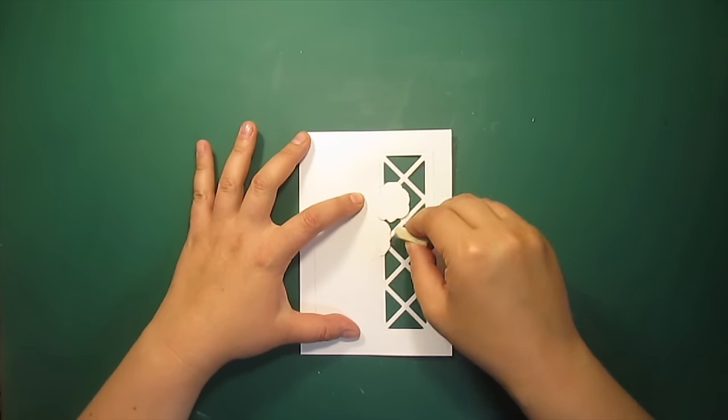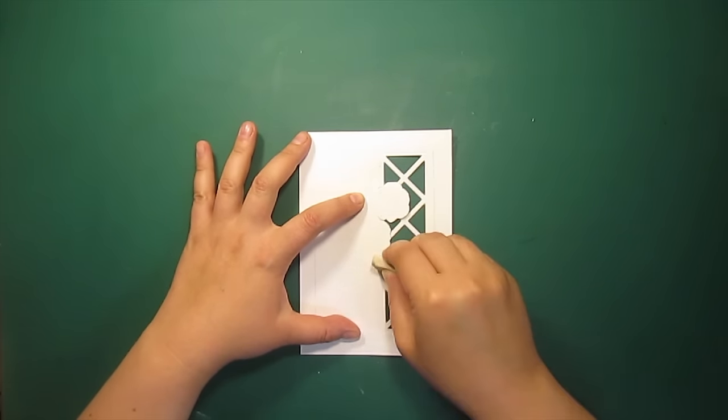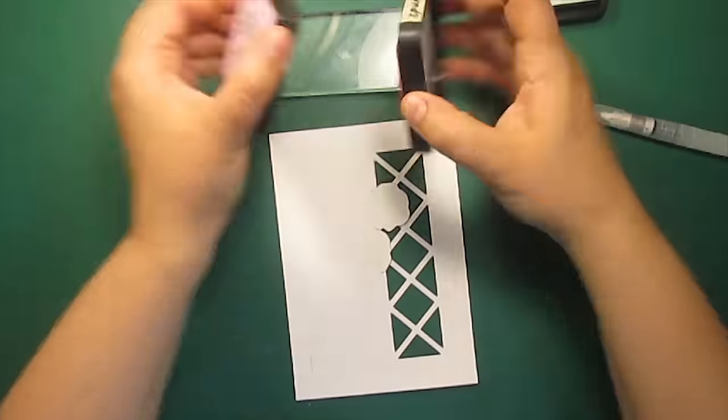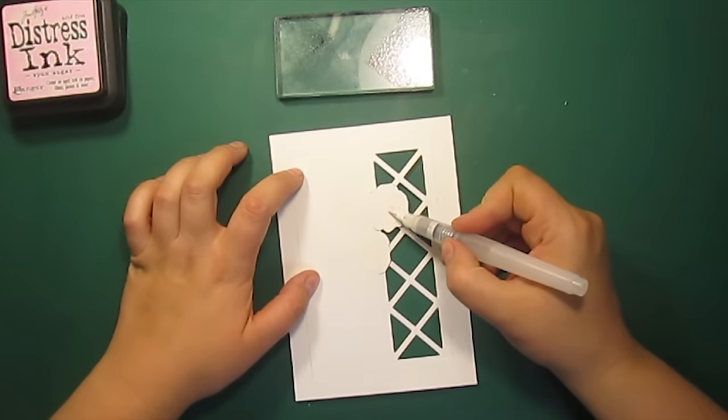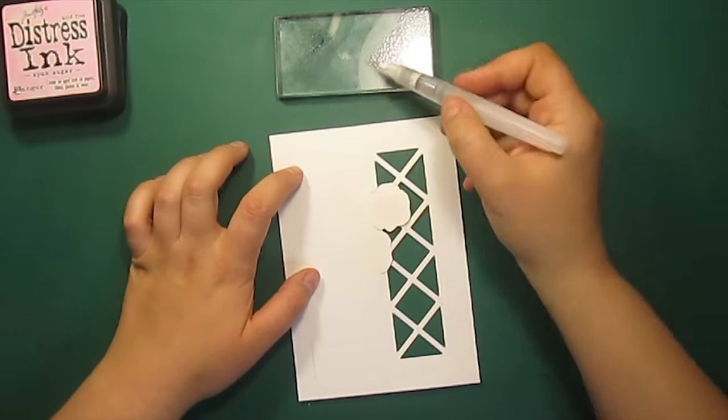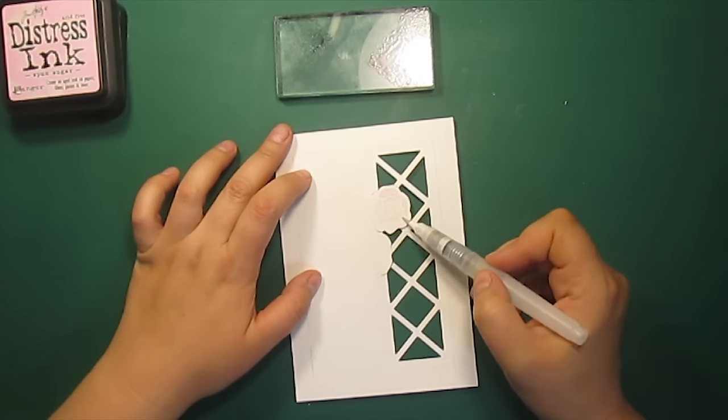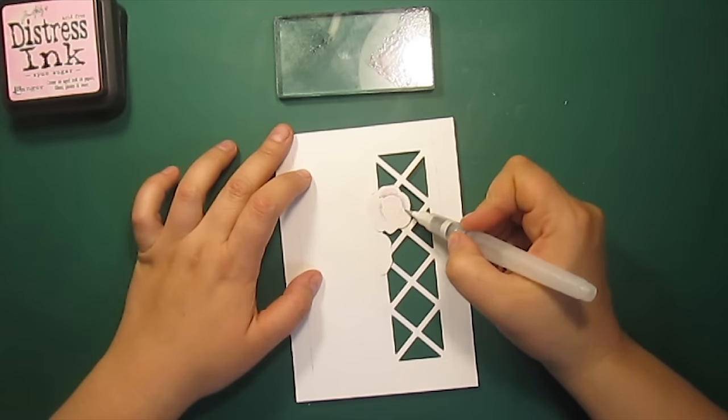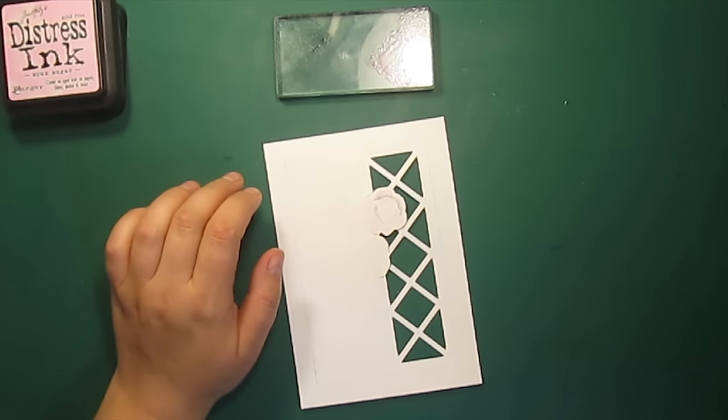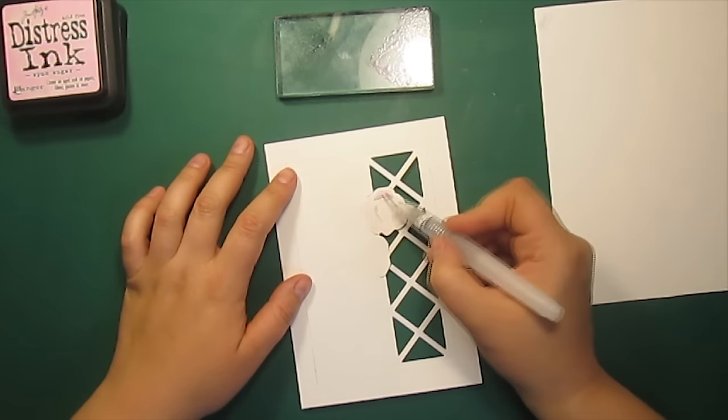I'm erasing the pencil marks now. To color the flowers I'm using spun sugar and weathered wood distress inks and a water brush. The technique is really simple. First I'm coloring the whole rose with spun sugar and then I'm applying some grey only at the bottom of the petals and blending it out.